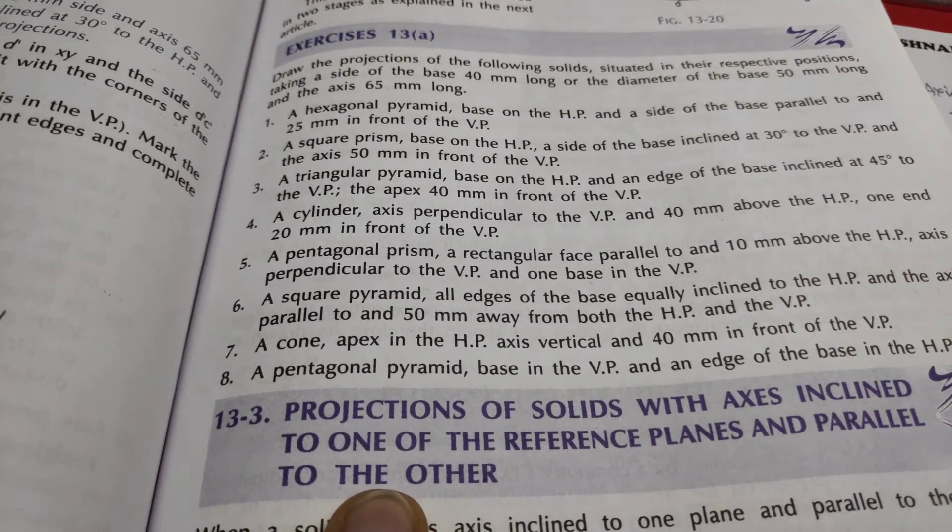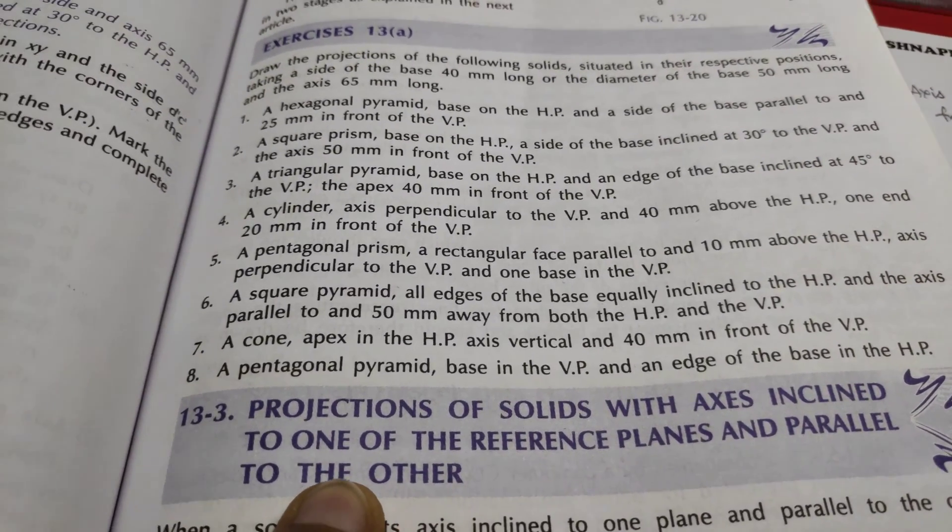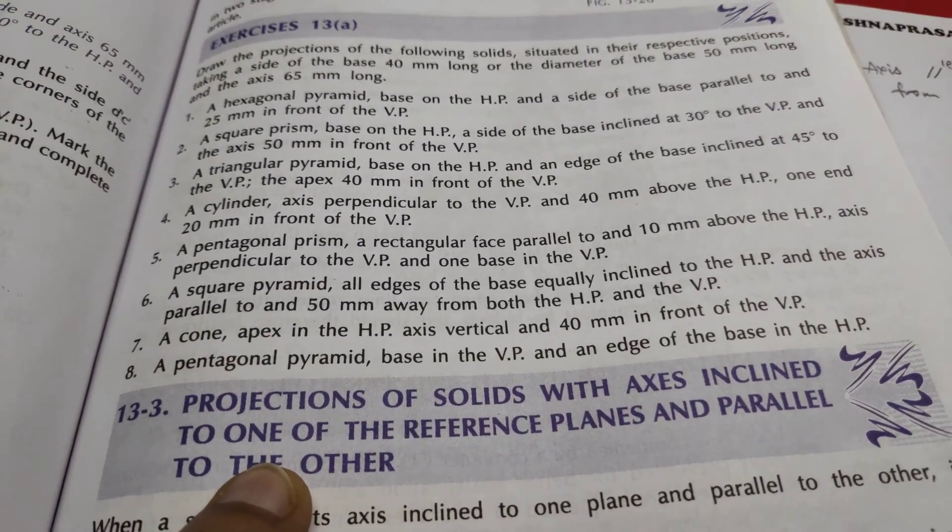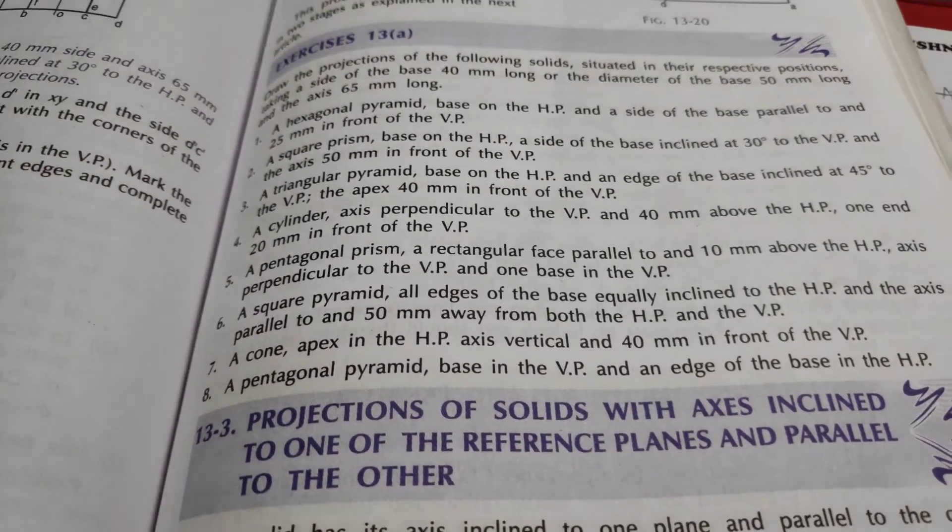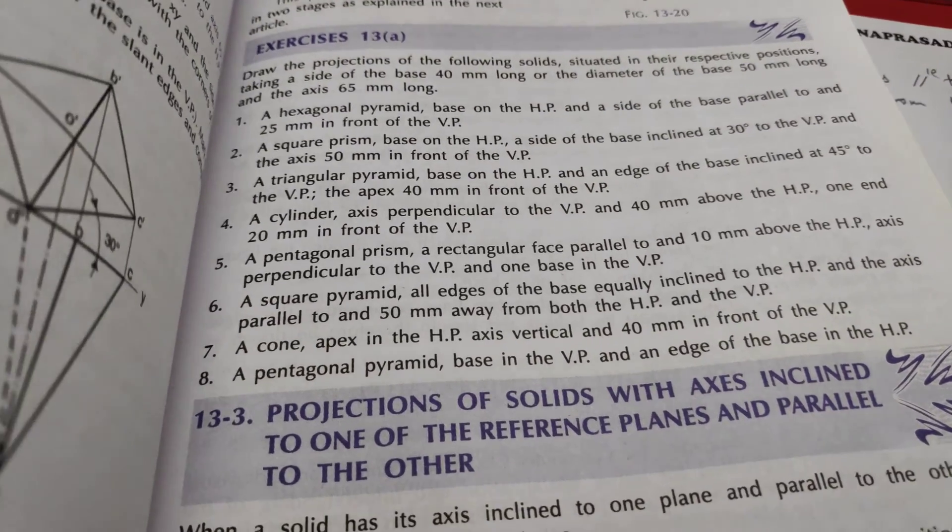The question is: the square pyramid, all edges of the base equally inclined to HP, and the axis parallel to and 50mm away from both HP and VP. Let's write down the question and start the problem.